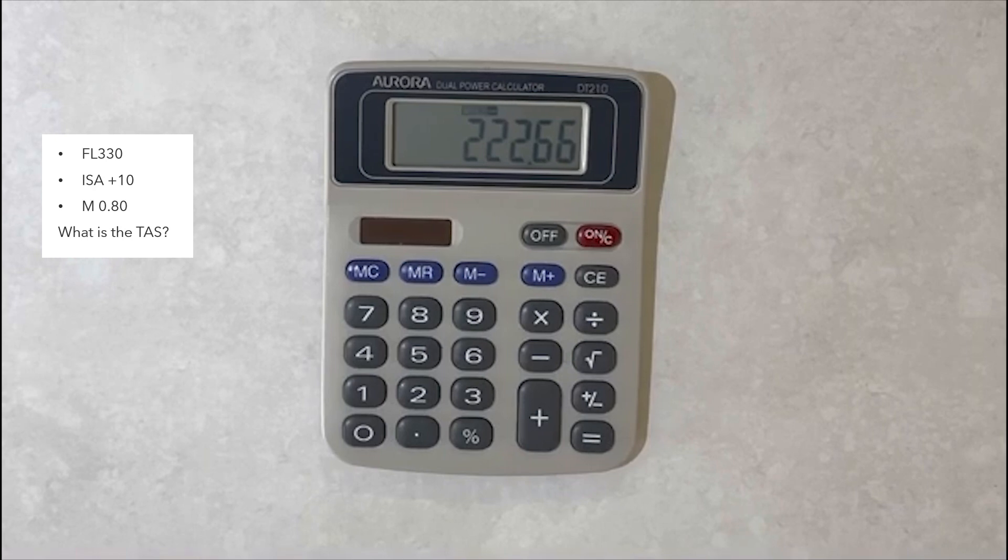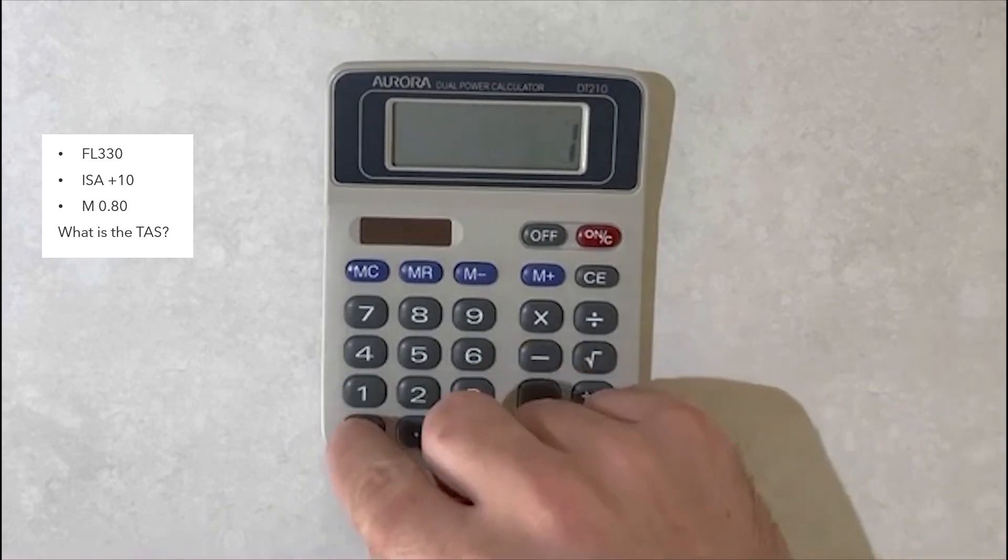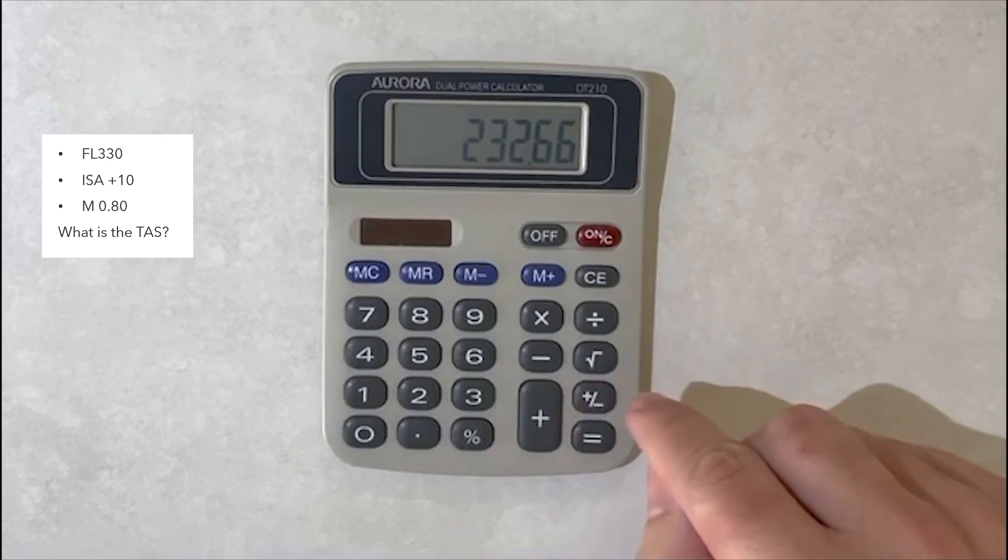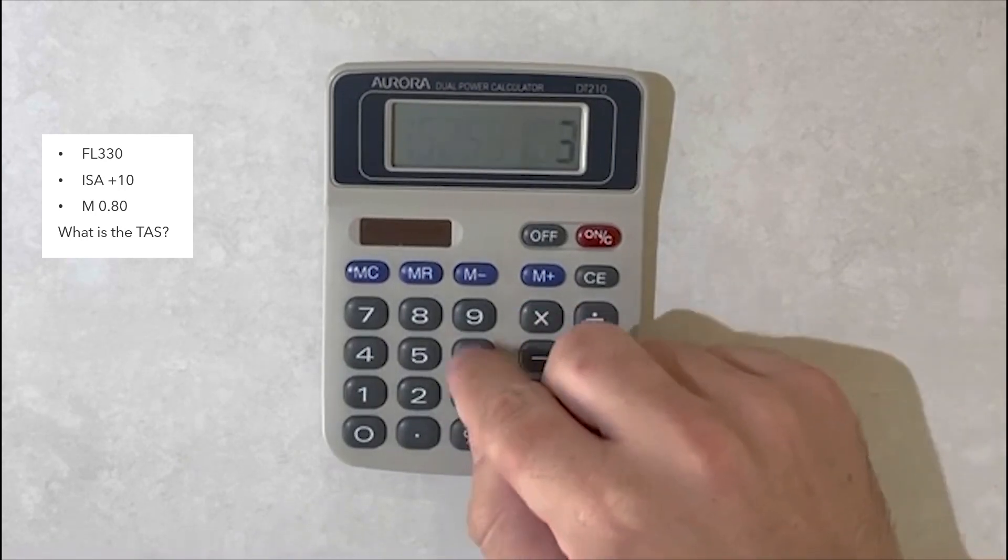Because this results in a negative number when we account for ISA deviation, we need to do the opposite of the deviation. So if it is an ISA plus day we would subtract it, if it is an ISA minus day we would add it. In this case we are ISA plus 10 so we would subtract 10. Once we do this we can do what I call the flow. We go plus minus, square root, and multiply by 39.